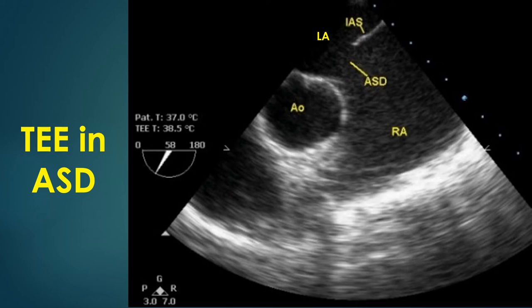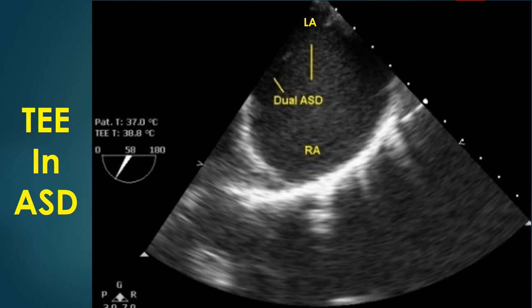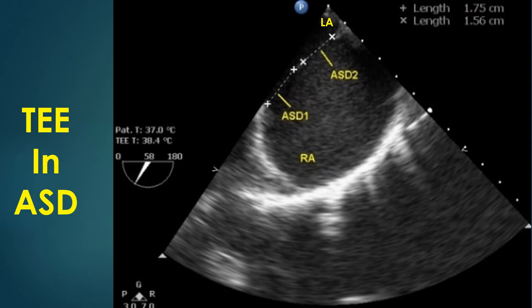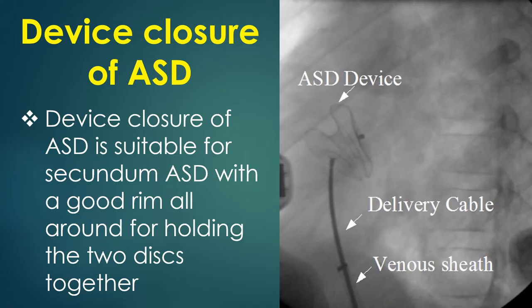On TEE short axis view, the aorta, part of the intra-atrial septum, and the ASD are shown. There is hardly any aortic rim — a bald aortic rim. Dual ASDs with a small intervening segment of atrial septum are seen on TEE with a dilated right atrium. The total size of both ASDs taken together is quite large and not suitable for device closure — one measures 17.5 mm, another 15.6 mm (total 33.1 mm). The rims at both ends also appear deficient, so device closure may not be feasible; surgical closure would be ideal provided there are no features of irreversible pulmonary hypertension.